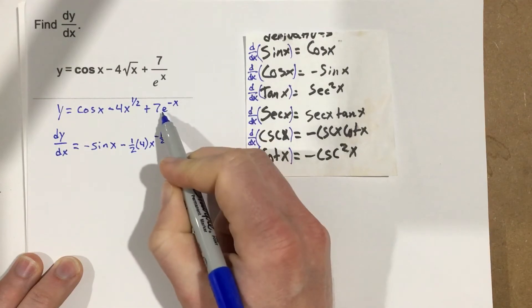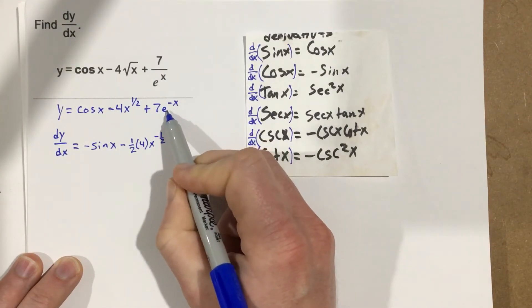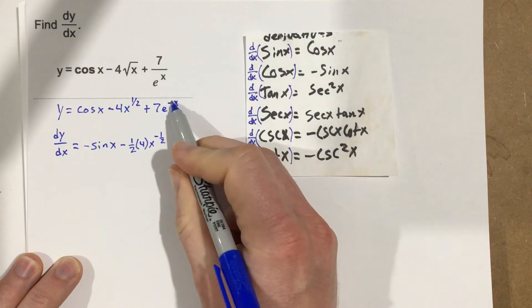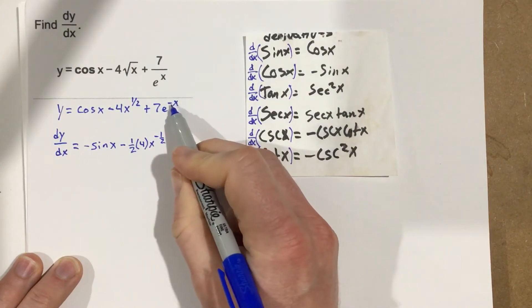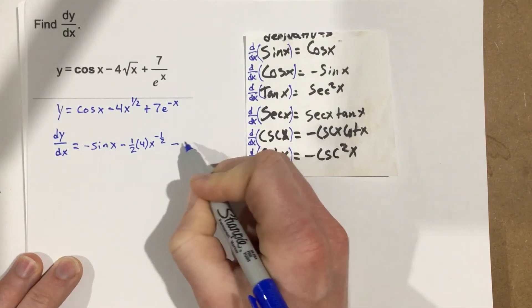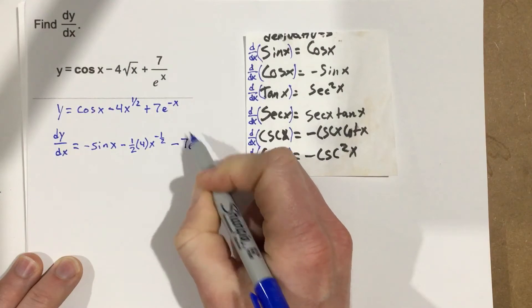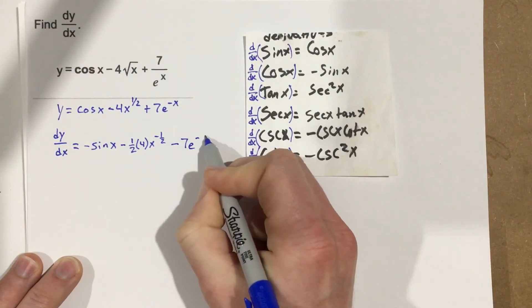And then remember the derivative of e to the negative x is going to just bring that leading coefficient and that exponent to the front. So it would be minus 7e and this just stays the same to the negative x.